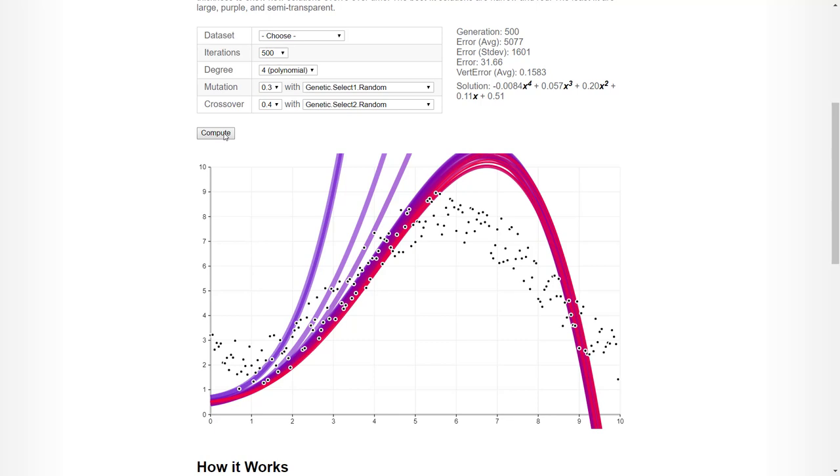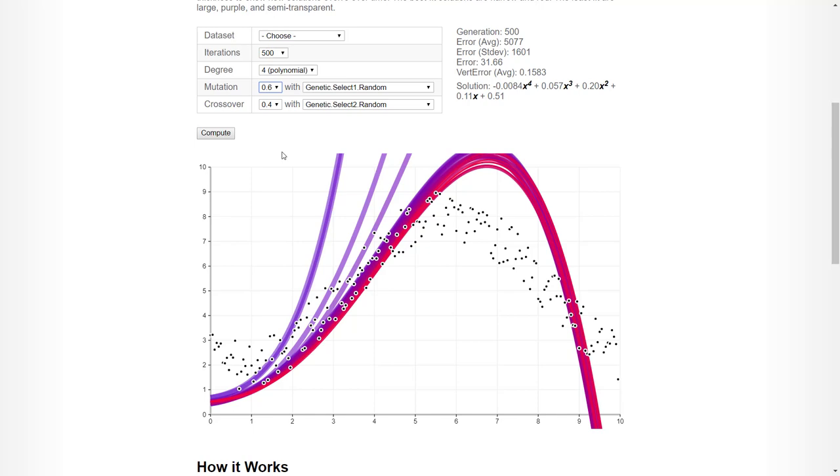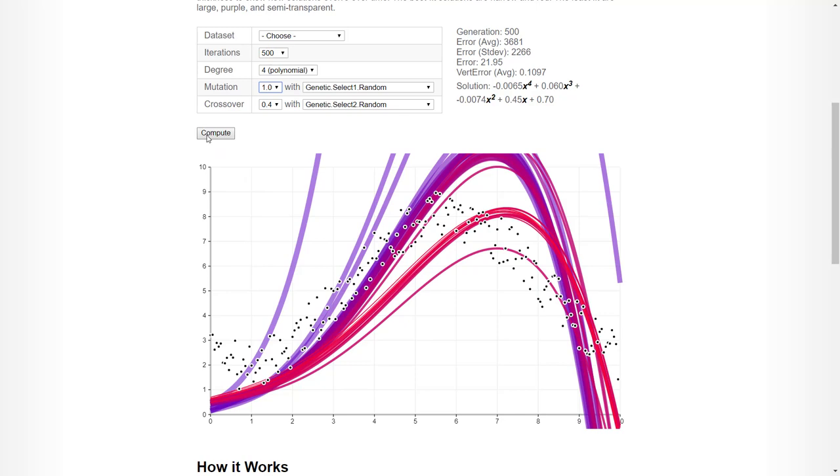31 in this example. But maybe if we increase the mutation rate a bit, we will get a better error. Oh yes! So thanks to random mutations, the GA encountered better solutions. So why not changing it to the maximum? Let's see, it was 29.95. Now it's 48. In this case, too many mutations interfered with the GA's ability to converge to a good solution.